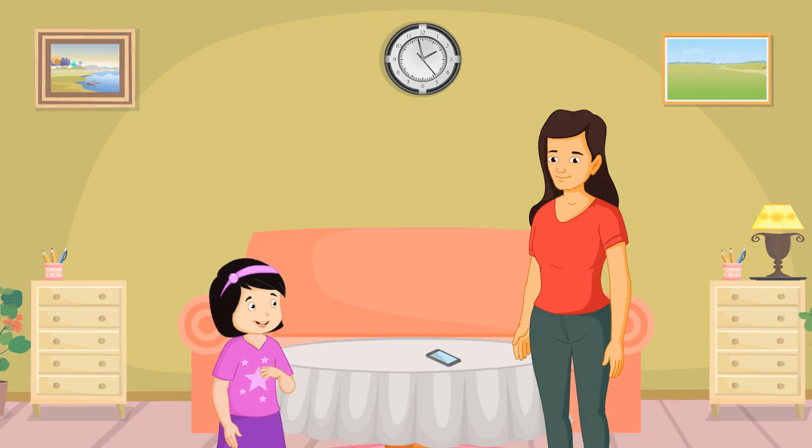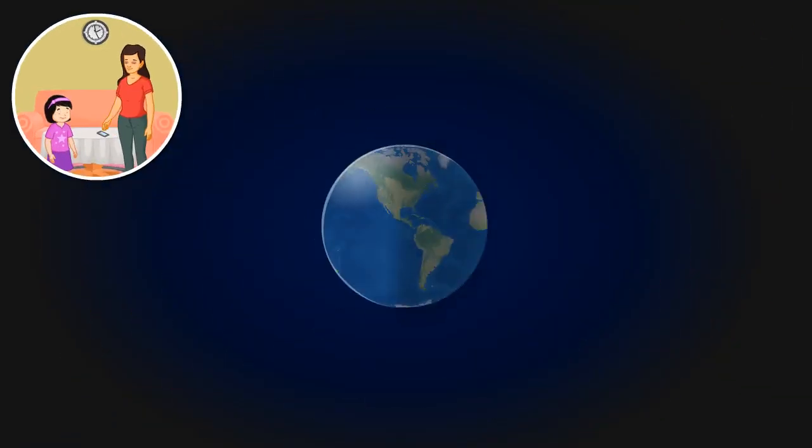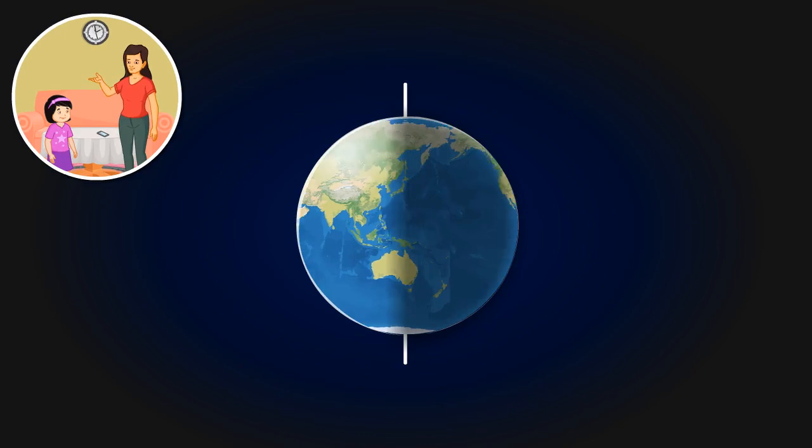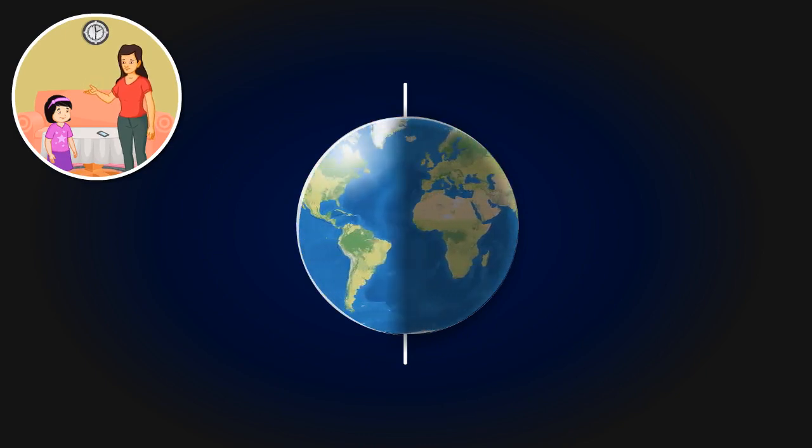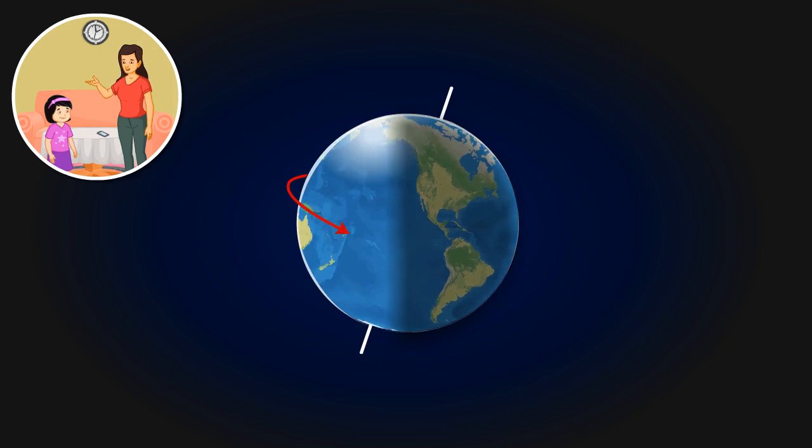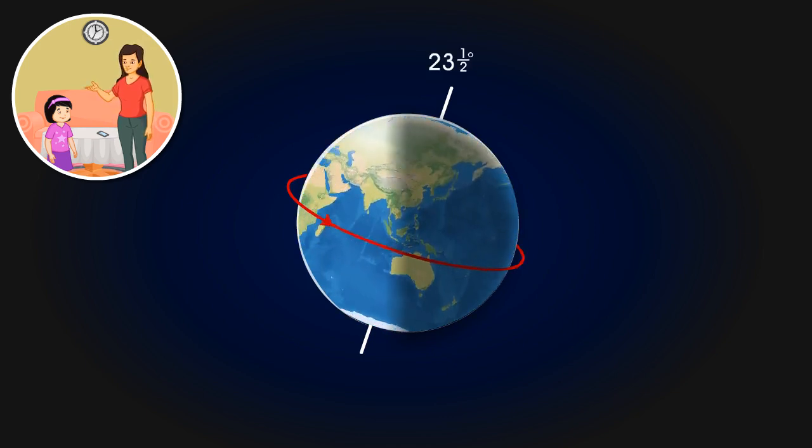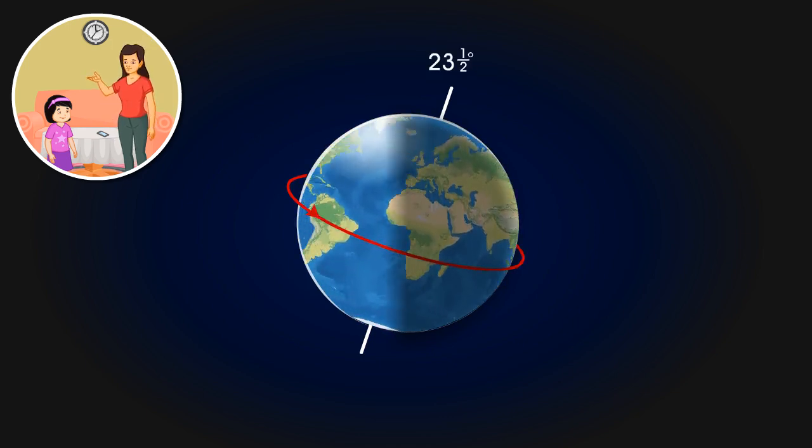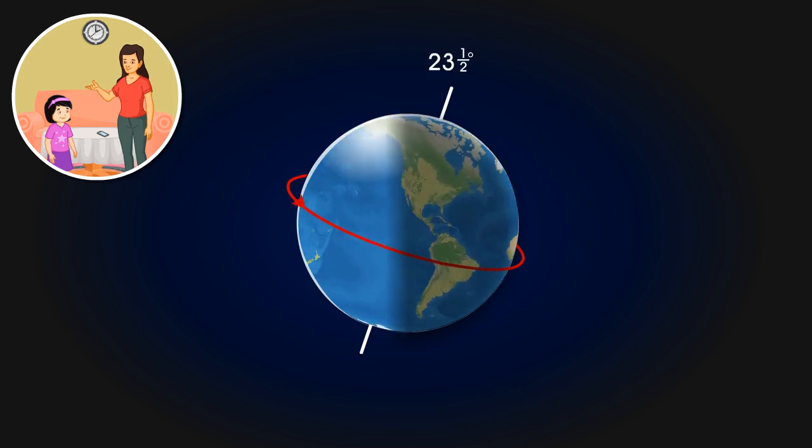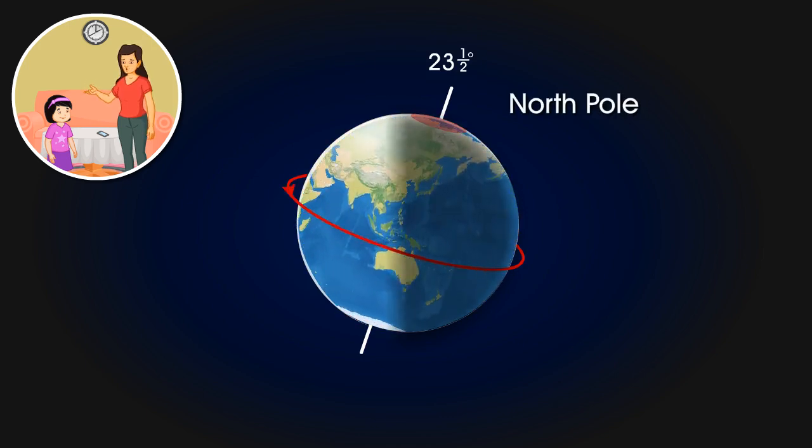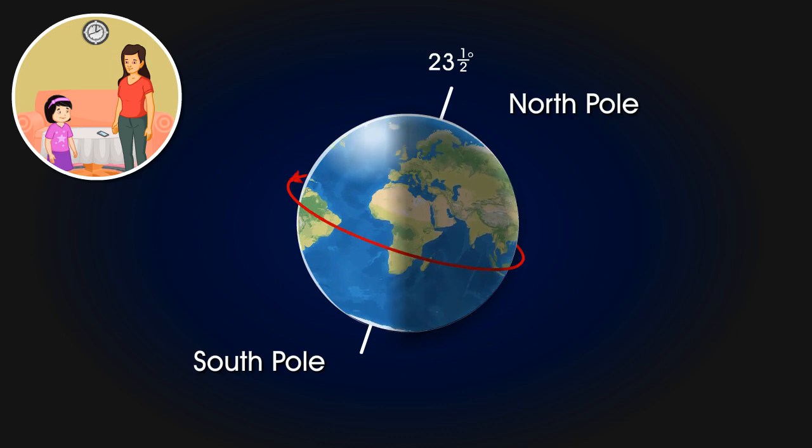What is an axis? An axis is an imaginary line around which the Earth rotates. The axis is tilted at an angle of 23.5 degrees. Its two ends on the surface of the Earth are called North Pole and South Pole, respectively.